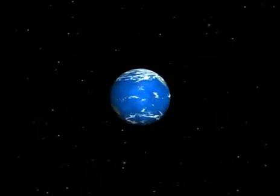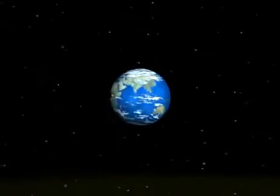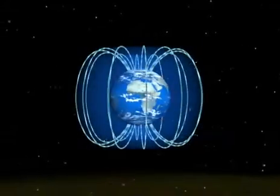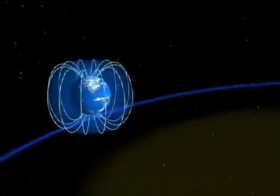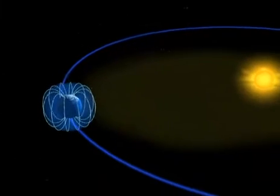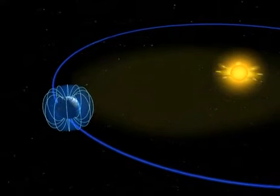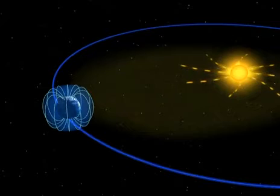We can't see this magnetic field as long as nothing disturbs it. But 150 million kilometers away, the Sun is constantly firing off particles into space.